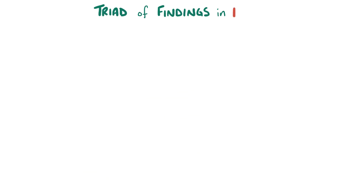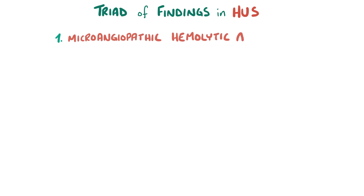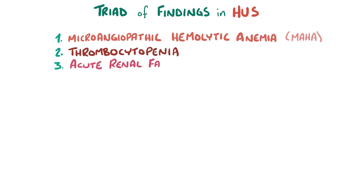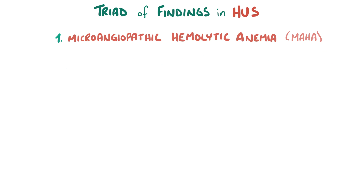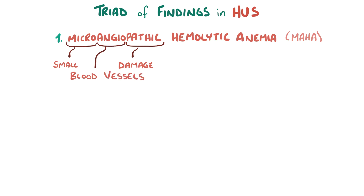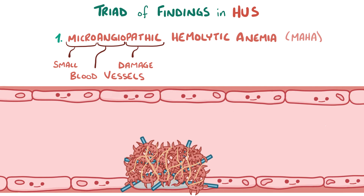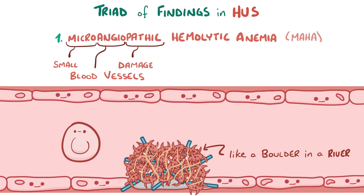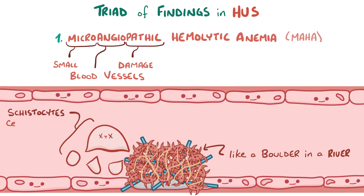The classic findings in hemolytic uremic syndrome are microangiopathic hemolytic anemia, or MAHA, thrombocytopenia, and acute renal failure. Microangiopathy refers to the endothelial damage in the small blood vessels, and the hemolytic anemia refers to the fact that the clots within these small blood vessels act like boulders in a river, making it difficult for red blood cells to flow through without getting damaged and destroyed. Unlucky red blood cells can get smacked against a blood clot and break, forming schistocytes — which are cell fragments — or helmet cells, which look like little red helmets with pointed ends after a bit of the cell broke off.